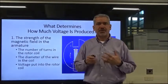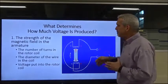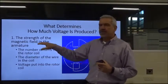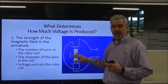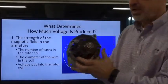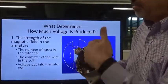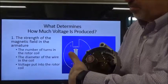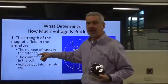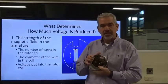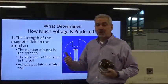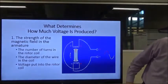A couple of things impact the amount of voltage that is created. Number one, remember we talked about turning our magnetic rotor through the coils of the stator. One of the things that affects the magnetic field in the armature of the rotor is the number of turns of wire in the coil. The number of turns — how many times we wrap that wire around the pole pieces — impacts how strong the magnetic field is. The more turns we have, the stronger the magnetic field. Also, the diameter of that wire matters: the thicker the wire, the greater the diameter, the stronger the magnetic field. And also the voltage actually being put into the coil impacts the strength of the magnetic field as well.